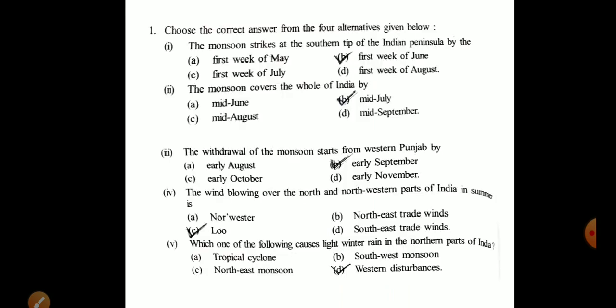Now, this is the question. Question number one: Choose the correct answer from the four alternatives given below. The monsoon strikes at the southern tip of the Indian Peninsula. Question two: The monsoon covers the whole of India. Number three: The withdrawal of the monsoon starts from western Punjab.